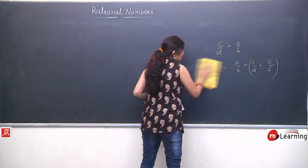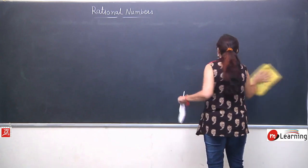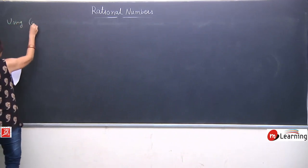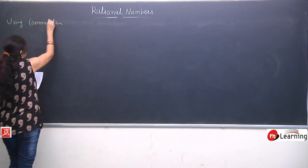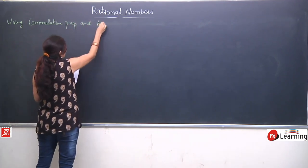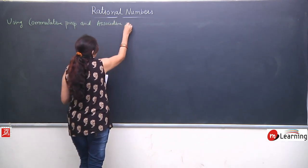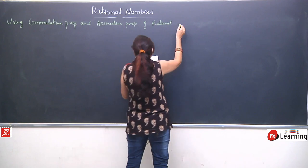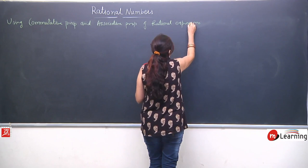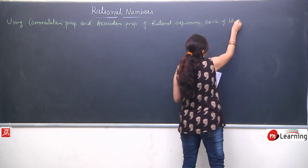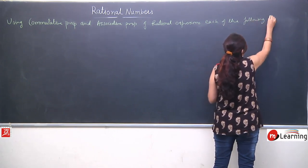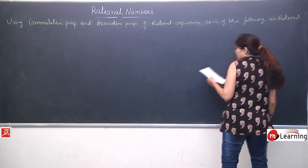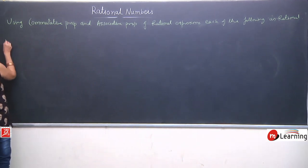Now I am going to solve some questions based on these two properties — we need to use these properties in the questions. The question says: using commutative property and associative property of rational numbers, solve each of the following. All numbers are rational numbers. Hame in properties ko use karte huye solve karna hai.